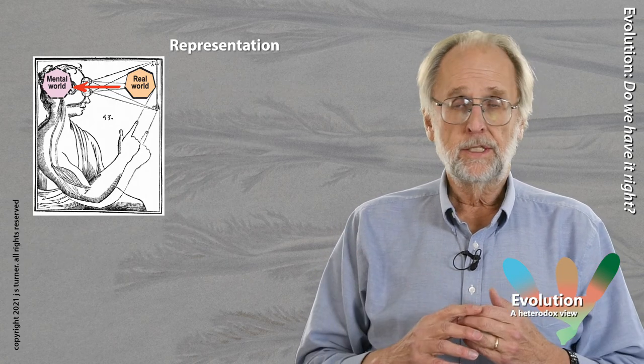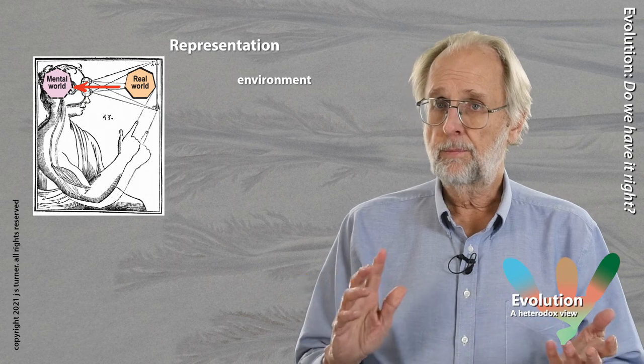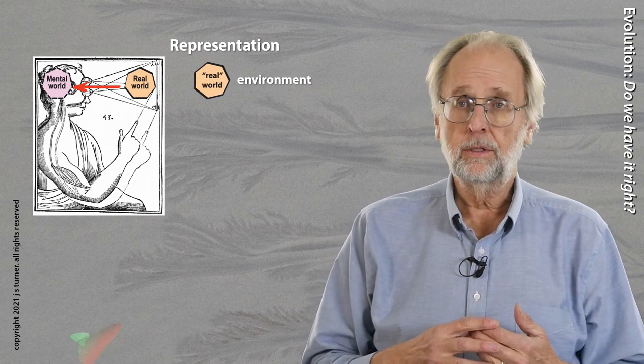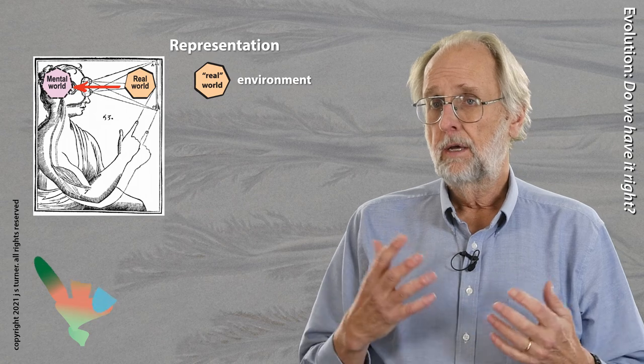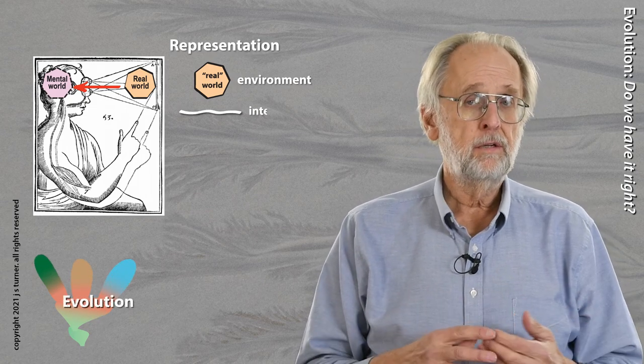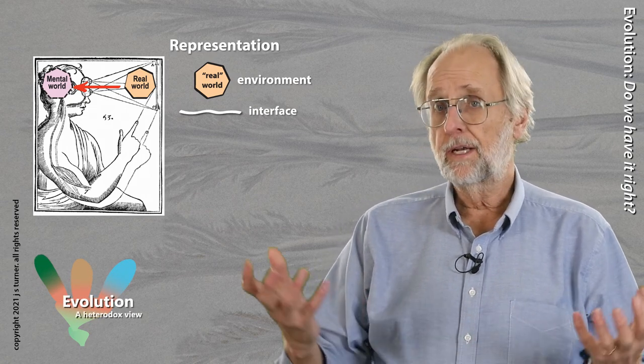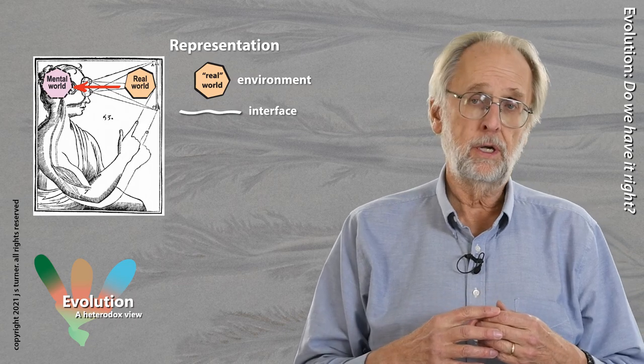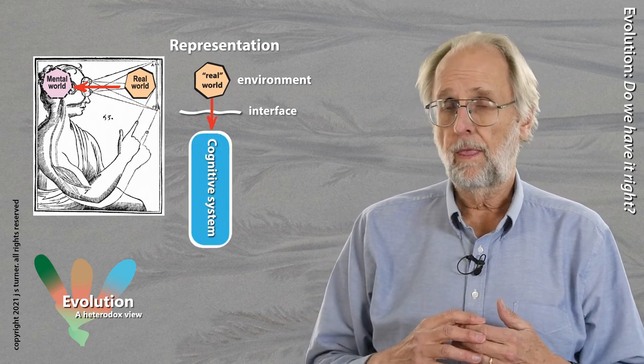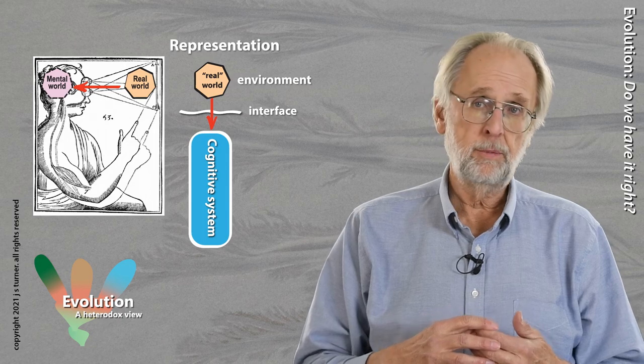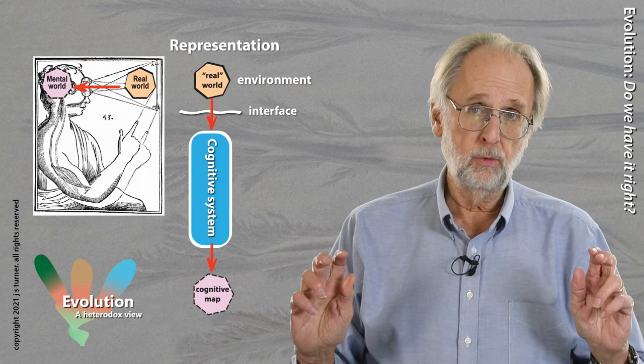Let's generalize this. We have an environment with properties represented by a symbol with a particular shape and color. There's an interface. We can think of this as an adaptive boundary that takes in information from the outside world and feeds it into a cognitive system, which creates the mental representation of the outside or real world.